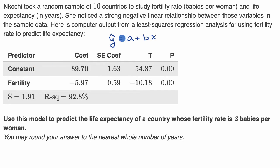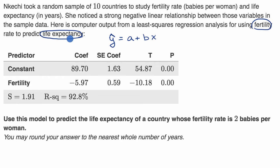In this situation, we're using fertility to predict life expectancy. So the thing we're trying to predict — life expectancy — that is y. And fertility is the thing we're using to predict that, so fertility is going to be our x.